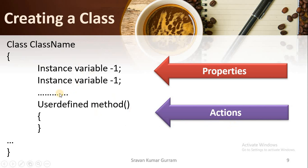You can use as many variables as you want as per your requirement. In our example, I have taken two properties and two actions. But as per your requirement, you can take any number of instance variables to store properties and any number of methods to implement the actions of the objects. What a method is and how to write one will be covered in coming videos. For now, we are focusing only on how to create the class.